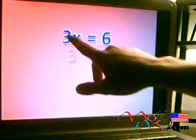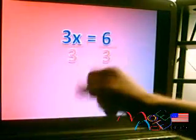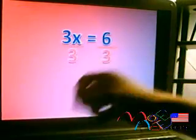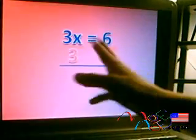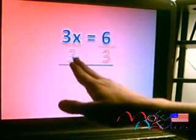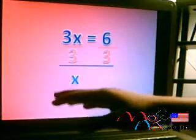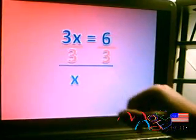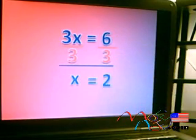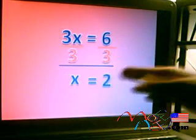3 divided by 3 is going to be 1. What's 1 times x? Well, it is just x. So, that means the only thing that matters here is the x, because 3 divided by 3 is just 1. 6 divided by 3, that's important. That's going to be 2. And that's going to be our answer. x equals 2.